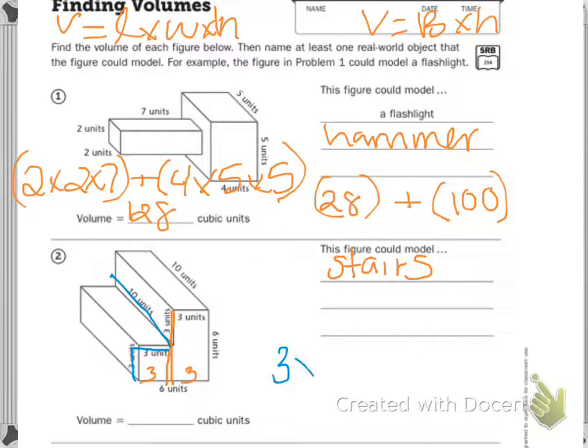So, 3 times 3 times 10 in parentheses plus, I'm going to change to green, this 6 by 3 by 10 unit.